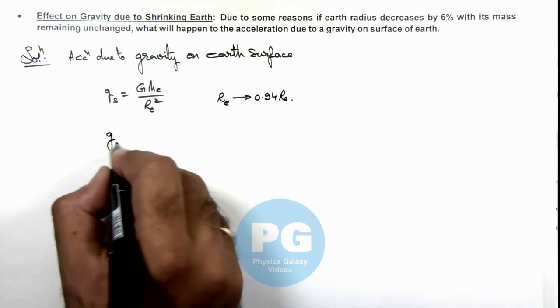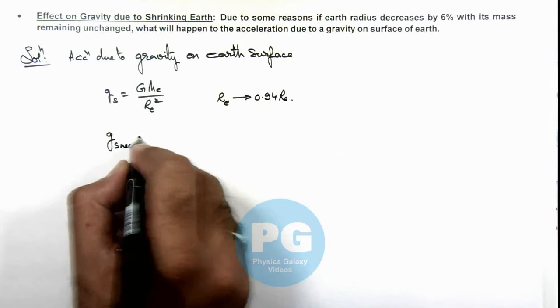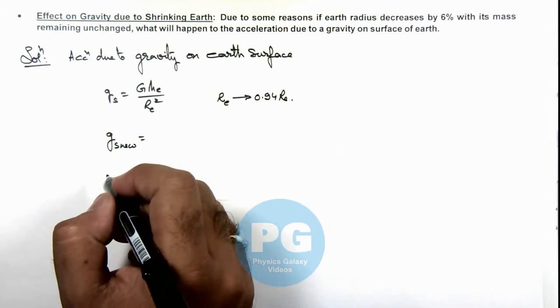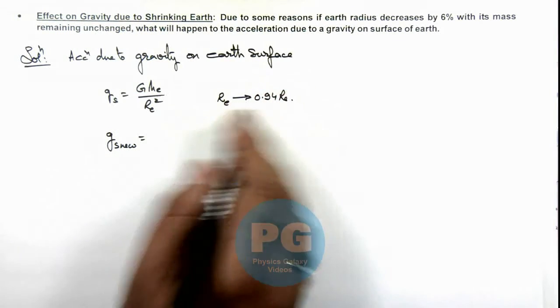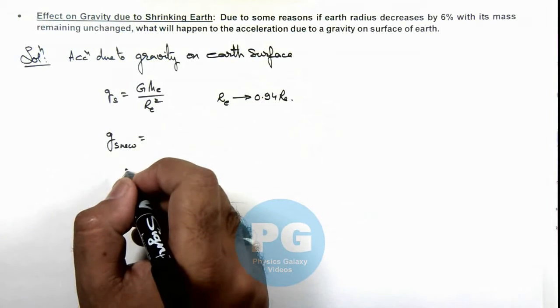If we calculate g_s new, this is the final acceleration due to gravity after the change due to shrinkage of Earth.